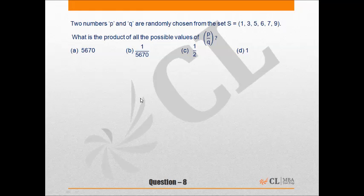This would surely be a level 1 question. Here it states that two numbers P and Q are randomly chosen from the set S. What is the product of all possible values of P/Q?